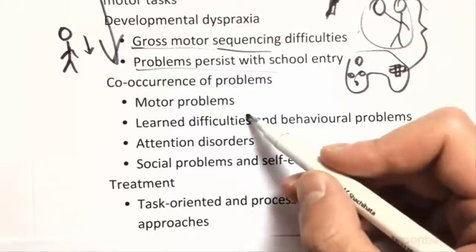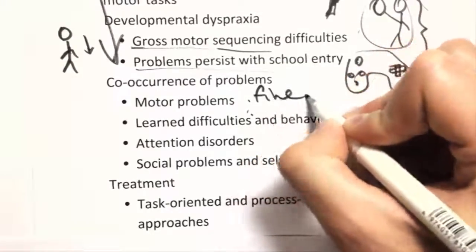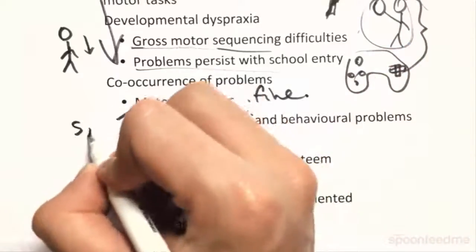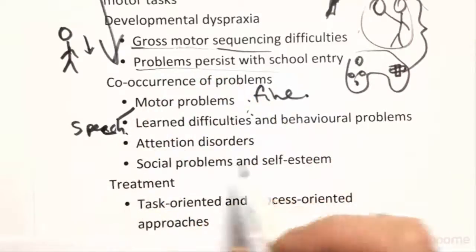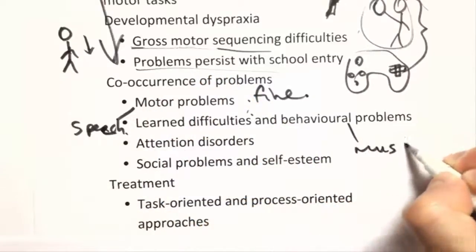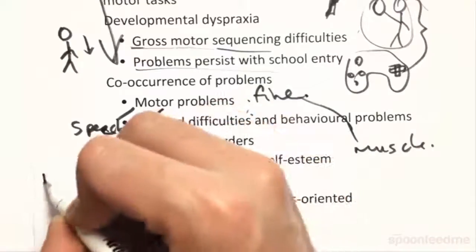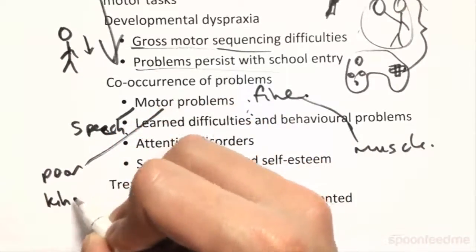And then associated problems are kind of other motor problems like fine control, like writing and stuff, speech. Also abnormal muscle tone. And that's just kind of like motor problems. Poor bodily awareness. Remember like we looked before with poor kinesthesis.